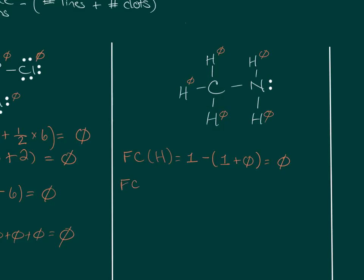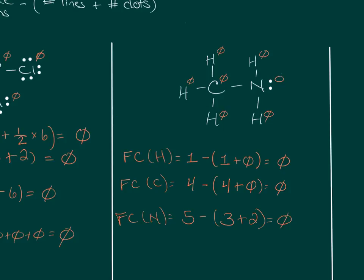Formal charge on carbon equals four valence electrons minus four lines (bonds) plus no lone pairs, so formal charge is zero. Formal charge on nitrogen equals five valence electrons minus three lines plus two dots, which is again zero. The sum of all formal charges is zero plus zero plus zero plus zeros for each hydrogen, equaling zero — correct for an uncharged molecule.